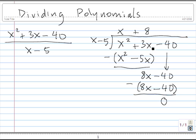X minus 5 goes in evenly to x squared plus 3x minus 40 because we have a remainder of 0. So x squared plus 3x minus 40 divided by x minus 5 is equal to x plus 8.